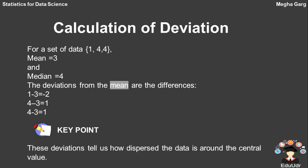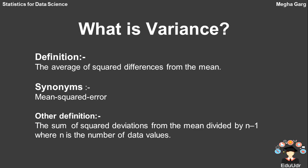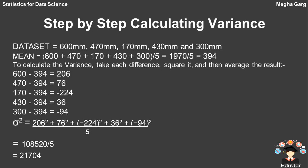The second topic is variance. The average of squared differences from the mean is called variance. Its formula is the sum of squared deviations from the mean divided by n minus 1, where n is the number of data values. For our data set — 600, 470, 170, 430, and 300 — the mean is 394. We take each difference: 206, 76, minus 224, 36, and minus 94, then square each value and take the average. The result is 21,704.